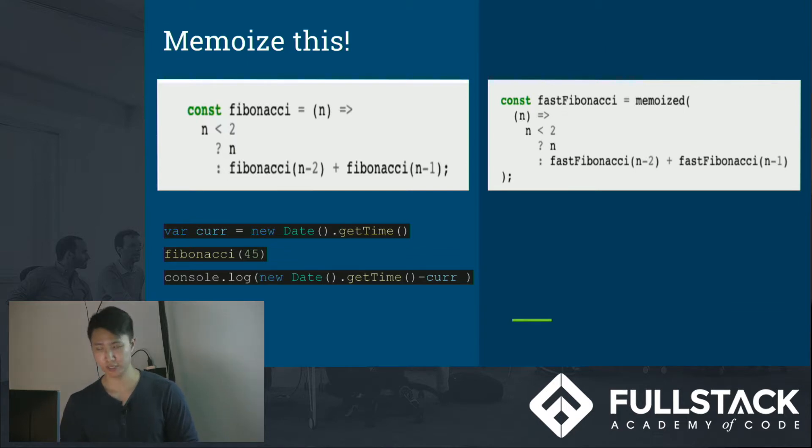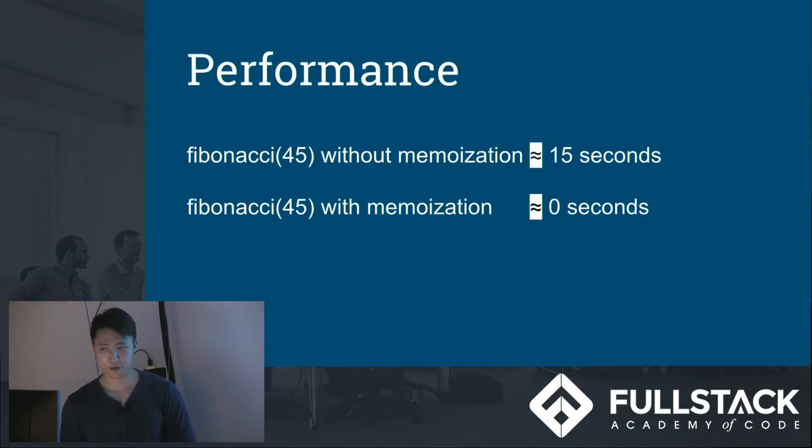And on the right side, we use the memoized version, where we pass in the same Fibonacci algorithm inside. Now, we can see the performance difference. Fibonacci 45 without memoization takes about 15 seconds. Fibonacci 45 with memoization is almost instantaneous. That's a big difference.